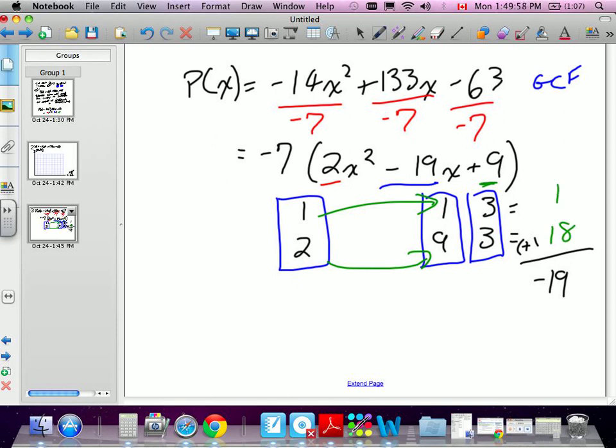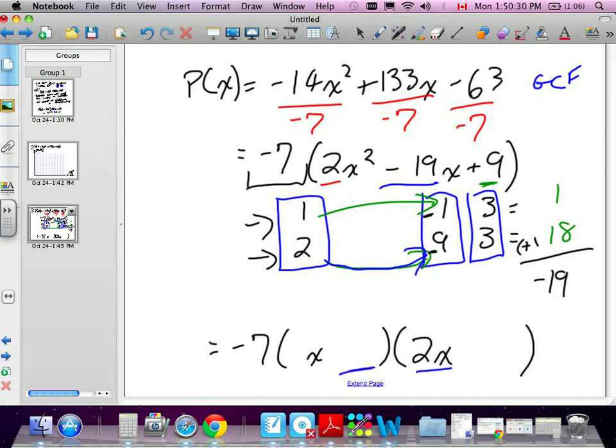When we go to put them into the brackets, first we have to bring down our greatest common factor, which is negative 7. Then I'm going to put in my first terms. My first terms are going to be 1x and 2x, or just x, because 1 isn't that important. Now here's the tricky part. Because we multiply 2 by negative 9, the negative 9 has to go in the other column. So negative 9 goes in this one. And because we did 1 by negative 1, our 1 and negative 1 have to go in opposite brackets. We have our negative 1. So I've now factored the terms.